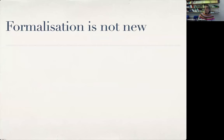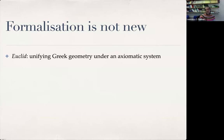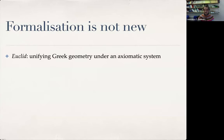Some will say that in formalizing mathematics we are sucking the soul out of it, but this is not the case. Mathematicians have always been doing this. When Euclid unified numerous schools of Greek geometry within a single system, that was a formalization of it — not formalization as we regard it now, but putting it under a uniform set of axioms is part of the same project.